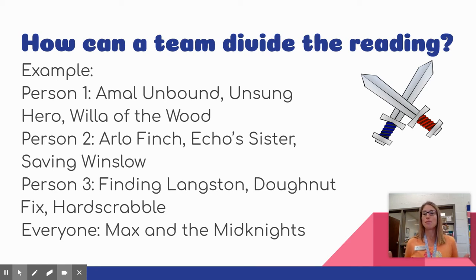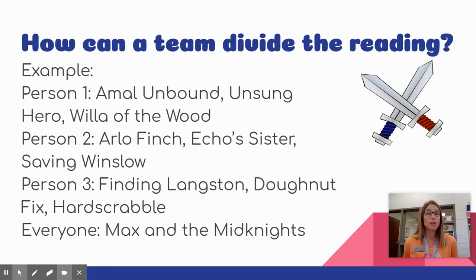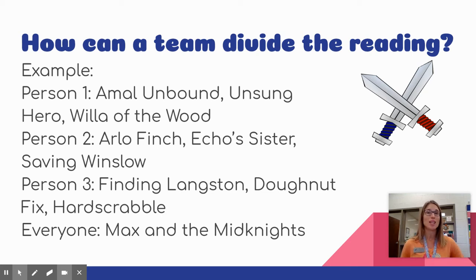All of you might want to read Max and the Midnights because that's a graphic novel. That's one way to do it — divide three, three, and three, and say everybody reads one particular book if there's one everyone wants to read. There's nothing saying all of you can't read the same book. Reading level wise, all of the books are a third or fourth grade level except for Willow of the Wood, which is a little bit higher. All of you can do it — fourth and fifth graders can easily do it. But that's the most challenging read. If you're a car rider in the morning, Miss Dodd is reading it aloud.